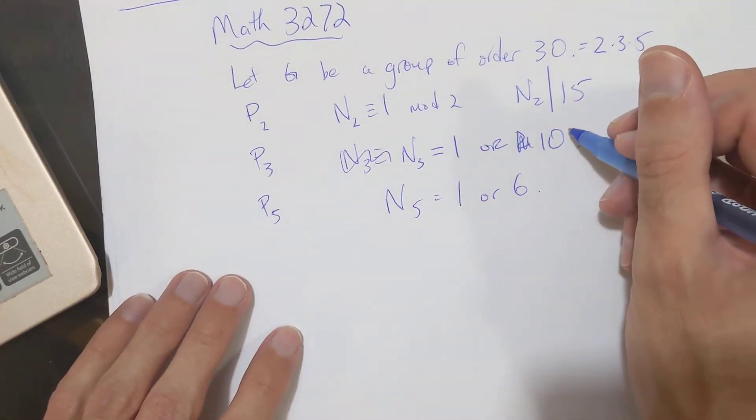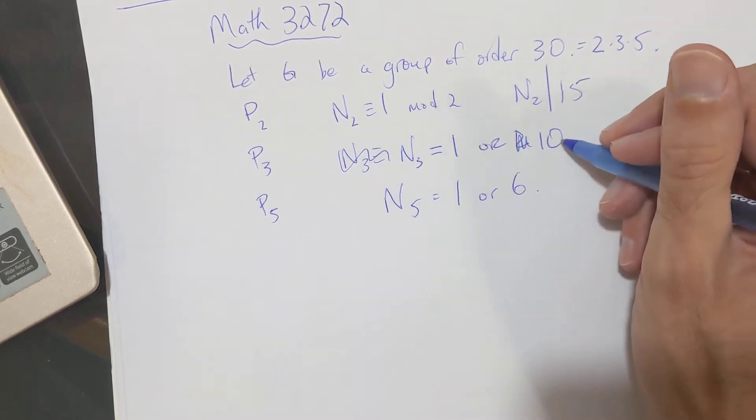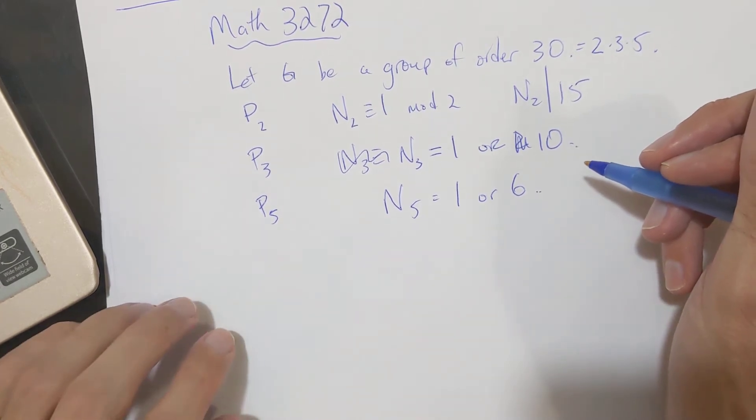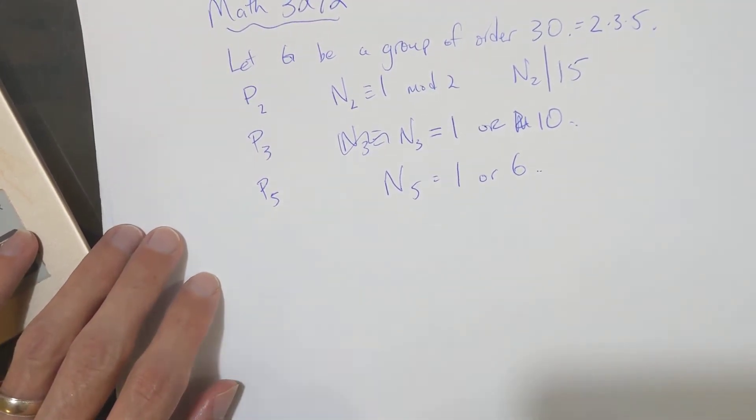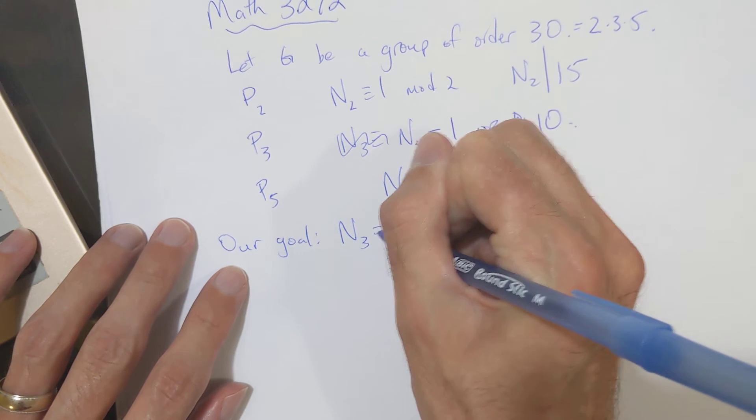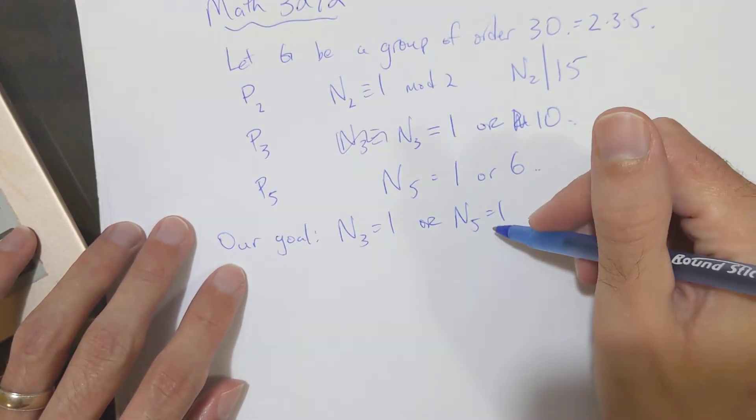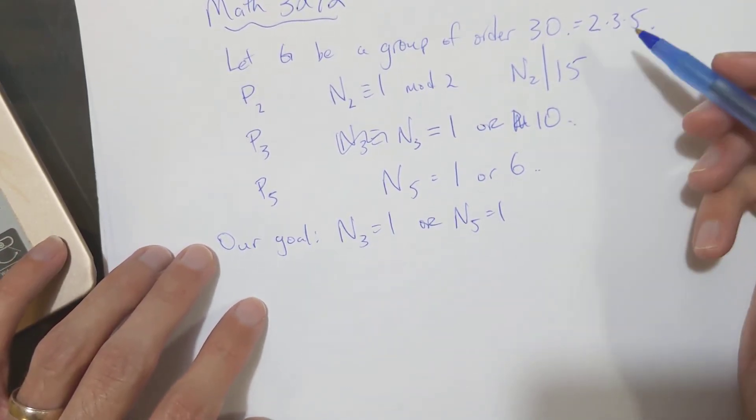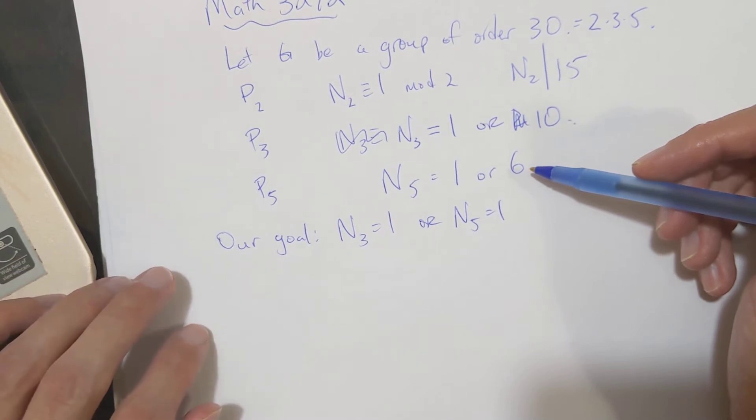And we want to argue, our first goal is to show that N3, you can't have both 10 and 6 occurring. And this is kind of like a typical way to apply the Sylow theorems. So, our goal, our first step is to show that N3 equals 1, or N5 equals 1, or both. And then, if we can do that, then we can construct a subgroup of order 15 of G. And that subgroup will automatically be normal, and it'll be a cyclic group, as we've seen.